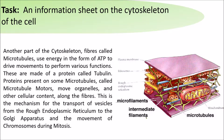Another part of the cytoskeleton, fibres called microtubules, use energy in the form of ATP to drive movements to perform various functions. These are made of a protein called tubulin. Proteins present in some microtubules called microtubule motors move organelles and cellular content along the fibres.